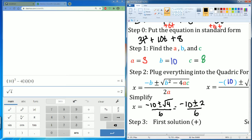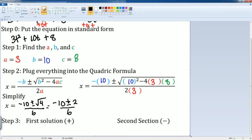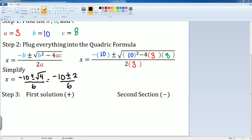So my two solutions here will be as follows. I have first, my first one is going to be x is going to be equal to negative 10 plus 2 divided by 6. And my second one would be x is equal to negative 10 minus 2 divided by 6.